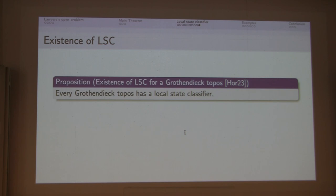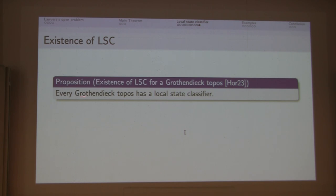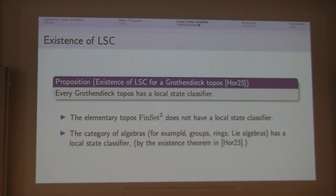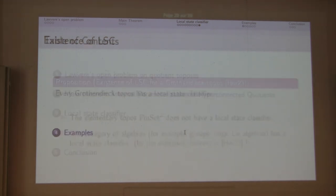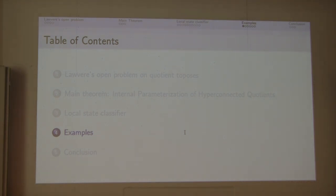I should mention the existence of local state classifiers. Even if you have a cocomplete category, the indexing category for the definition of local state classifiers might be large, so the existence is non-trivial. But in my paper I explicitly construct the local state classifiers of Grothendieck toposes. So every Grothendieck topos has a local state classifier. But for some elementary toposes — like the effective topos — there does not exist a local state classifier. I want to emphasize that the definition of local state classifier makes sense even for non-topos categories.